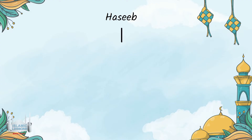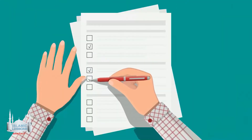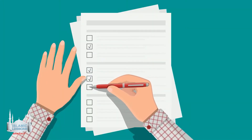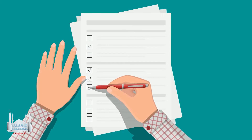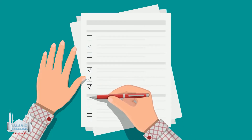The word hasib can be derived from one of three words. The first word is husab. Husab means to calculate and to evaluate. Like when a student hands in their exam paper, the teacher will calculate and evaluate the exam by giving the student a certain mark.